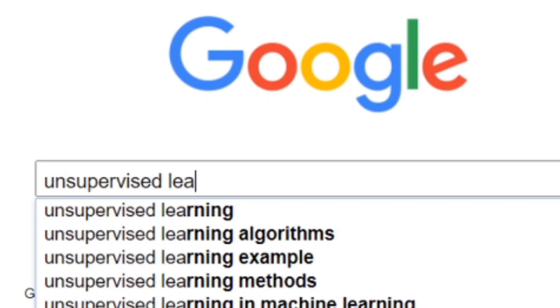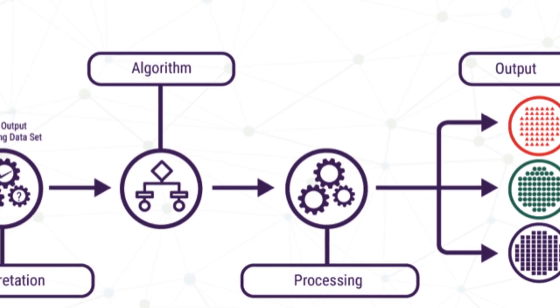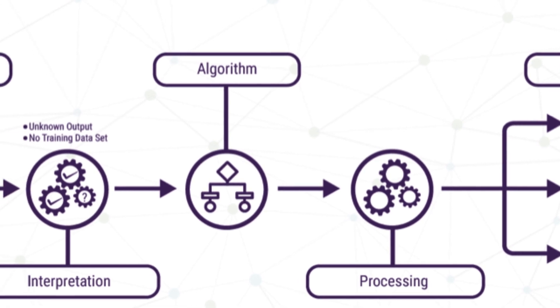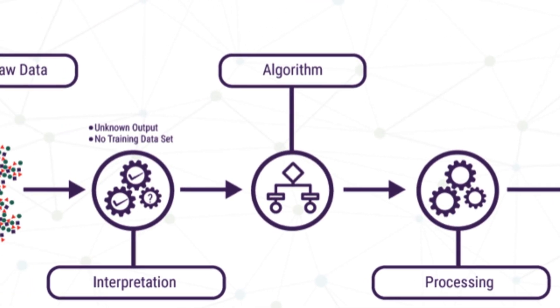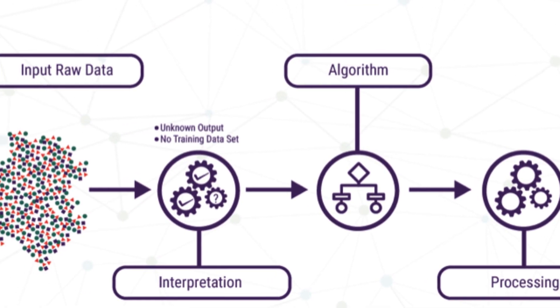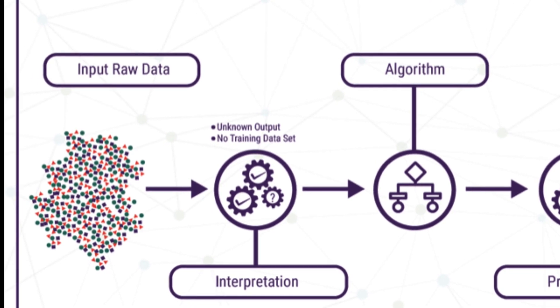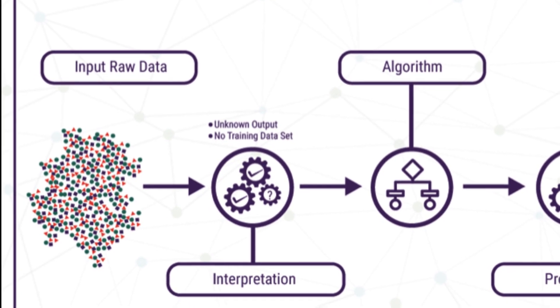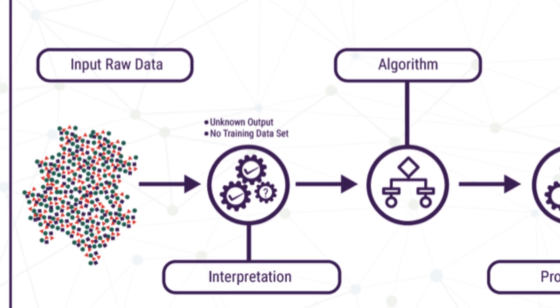Unsupervised learning is generally put into application when we don't know the outputs and when we allow the machine to find a structure by feeding just the input. It is used to find the hidden patterns or cluster the data into segments.